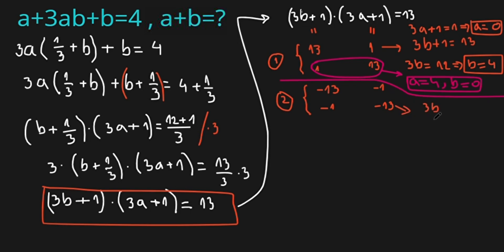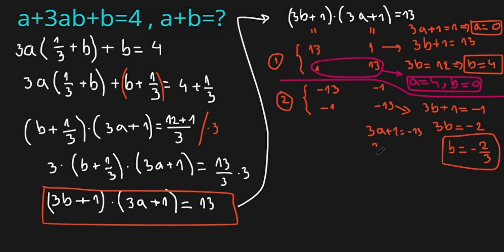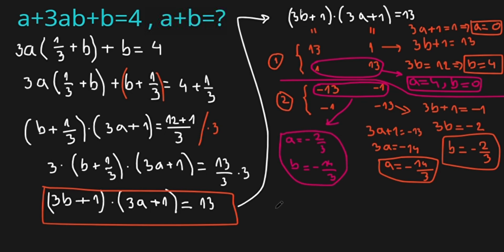Now for the negative cases. In the fourth case, 3b + 1 = −1, so 3b = −2, meaning b = −2/3. And 3a + 1 = −13, so 3a = −14, meaning a = −14/3. In the third case, a = −2/3 and b = −14/3. Since we are looking for integers and these are rational numbers, both negative cases are incorrect.